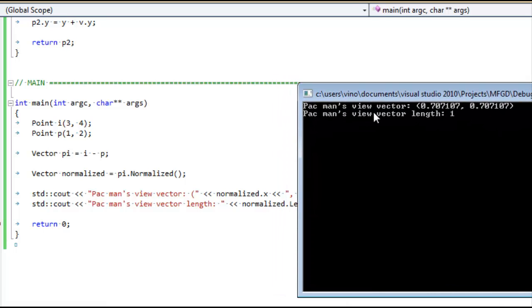So Pac-Man's view vector is .707, .707. That means he's looking up and to the right because these are both positive numbers. And .707, if you're sharp, you'll recognize as square root of 2 divided by 2. And I'll leave it as an exercise to you to figure out why that is an important number that you're going to see a lot in game development. Do the math by hand, the math here. Take these two points and do the math by hand and you'll see how you get this number. It's a very common number and you should become familiar with it.